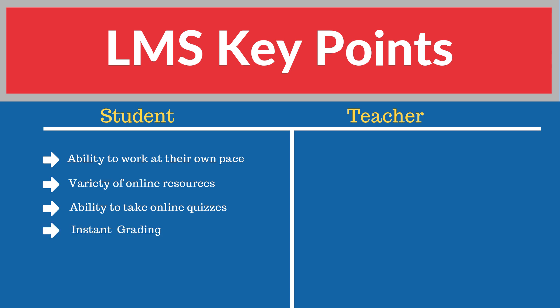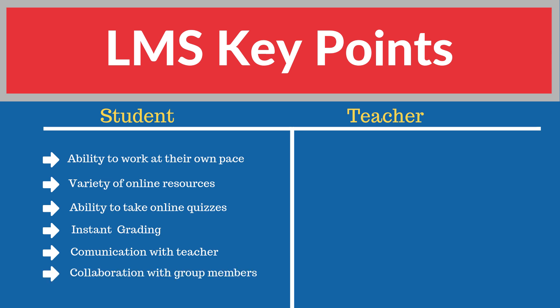There is also instant grading — as soon as a student finishes a quiz, they will be graded instantly, which is a good thing since students want to know their results as soon as possible. Then there is communication with the teacher; students have the opportunity to communicate with the teacher, which could be asynchronous for a fully online course, or synchronous if the teacher has live sessions. Finally, collaboration with group members — some students are shy, but when they are in online groups they can talk more frequently, ask questions, and collaborate with each other.